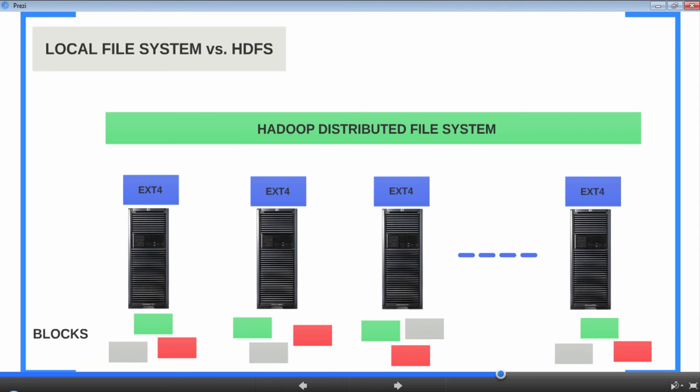HDFS has a global view of the file even though the file is spread throughout the cluster, whereas the local file system only has a local view of the blocks it is managing. Many Hadoop learners fail to understand this and miss the local file system involvement. When you upload a file, the individual blocks are stored by the local file system in each node. But where exactly? Why don't we see them?